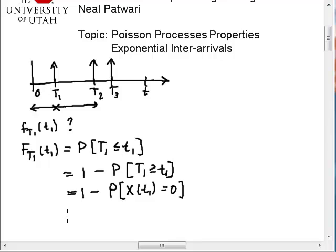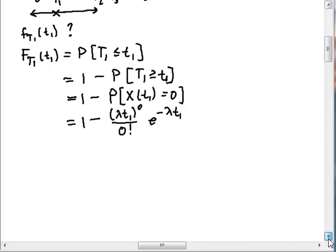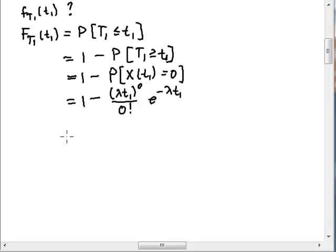Well, we know from the PMF of a Poisson random process that this is equal to the following. It's equal to lambda t1 to the zero, which is going to be one, divided by zero factorial, another one, and then e to the minus lambda t1. Well, this first fraction is just going to be equal to one, so I've got one minus e to the minus lambda t1.